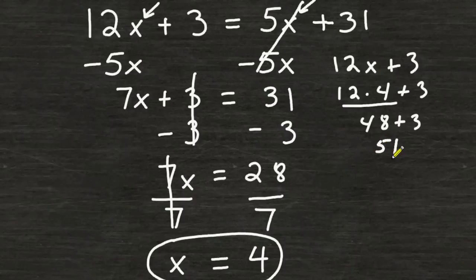Now let's plug 4 in for x on the right hand side of our equation. We have 5x plus 31. We are going to substitute 4 in for x. So now we have 5 times 4. And then we add 31 after multiplying 5 times 4.